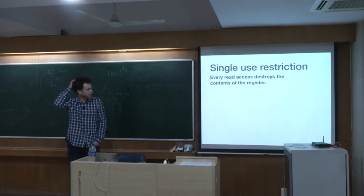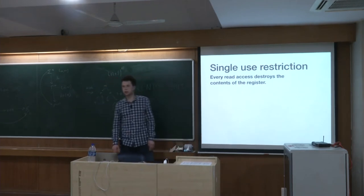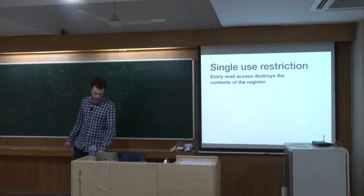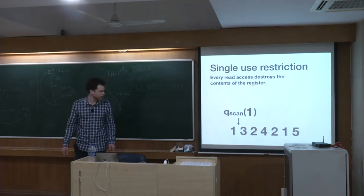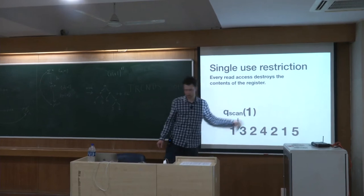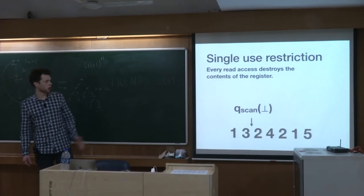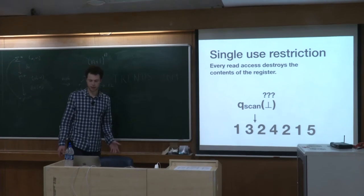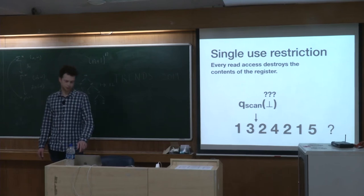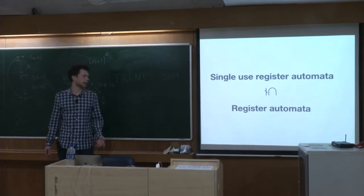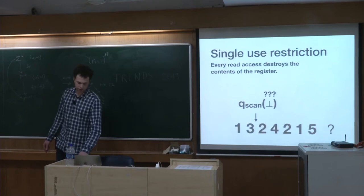The modification we propose is to consider an automaton like this, but every read access destroys the content of the register. If we try to repeat this construction, we save the letter in the register, but when we compare whether 'three' is equal to 'one,' we lose 'three' because we have compared it. So now we have no idea what the first letter was, and therefore no idea at the end whether the word should be accepted. It can be proven that there is no single-use register automaton that will recognize the language 'the first letter appears again.' So it is a weaker model.